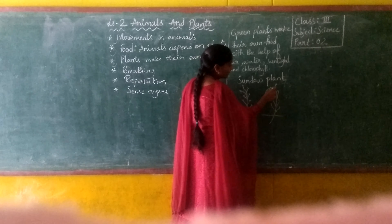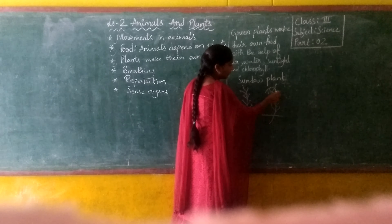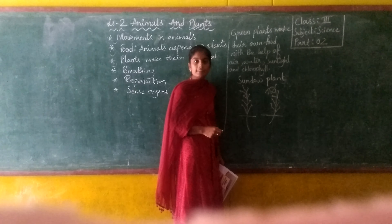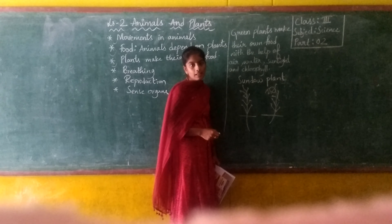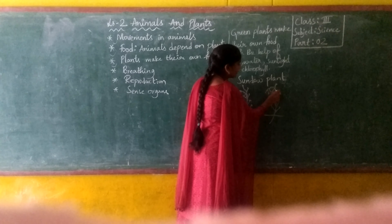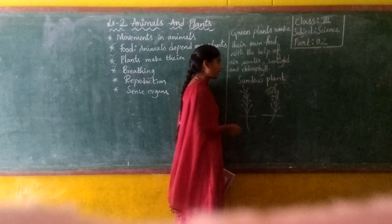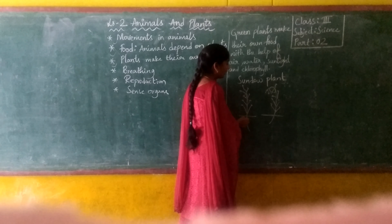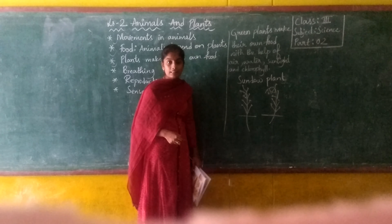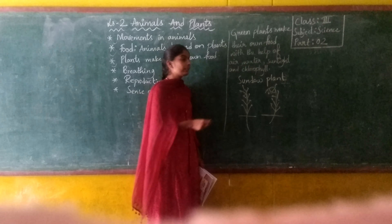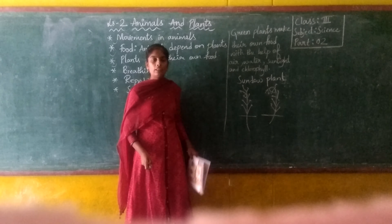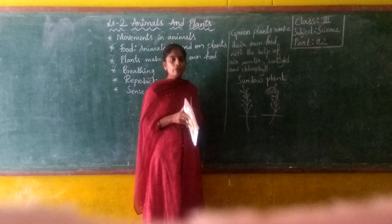There are some digestive juices present on this plant. That digestive juice helps the plant to digest the insect. So by this method, the Sundew plant eats insects and is dependent on insects for its food.